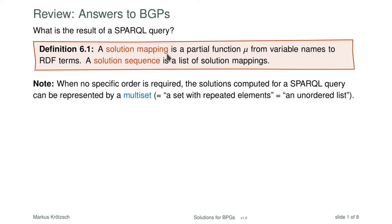We first defined what an answer to a SPARQL query is in general. We said that this is given as a solution mapping — what we usually show as a line in a table to the user. This solution mapping is a partial function from variable names to RDF terms. At this point you know quite well why this is partial. We have seen several constructs such as UNION or OPTIONAL which have the capability of creating query results where not every variable has a value for several reasons.